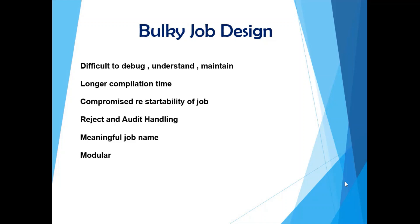Another good job design practice is to include audit columns — things like your job run time, job start time, the current state of your job (whether it's running, aborted, or completed successfully), and when it was last run. These are important in a production environment when analyzing the last successful run of the job, how long it took, and how many records were processed.